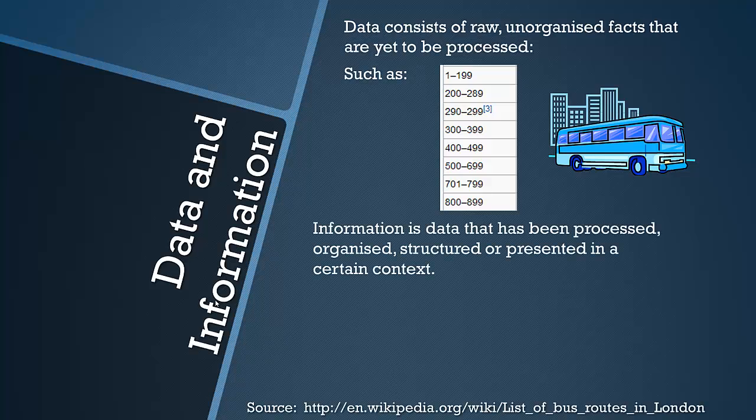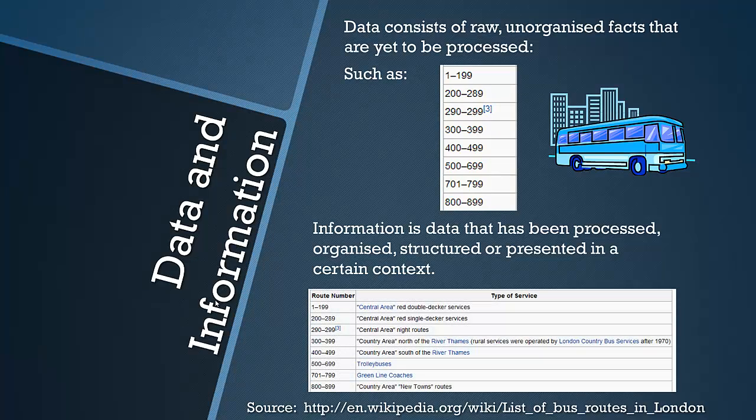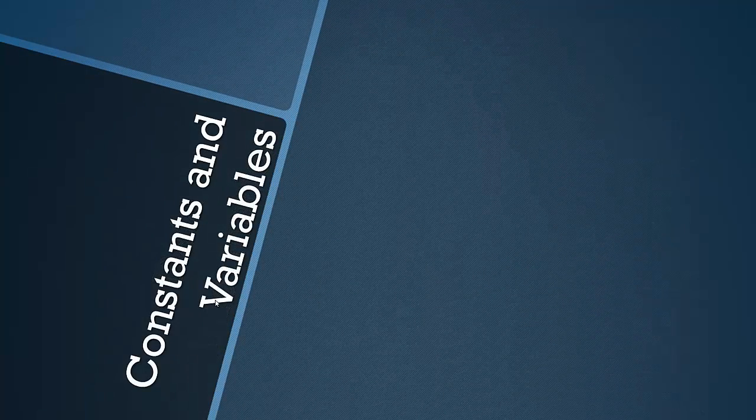But information is data that's been processed, organised, structured or presented in a certain context. So now you can see in the bottom left, this table means a lot more because it's got a title and data alongside it. Now you can know that it's information about a bus route. That's the difference between information and data, and that's important as it's the basis of much of the specification.